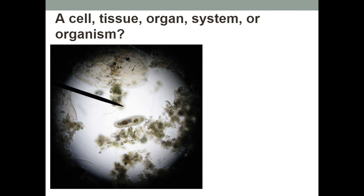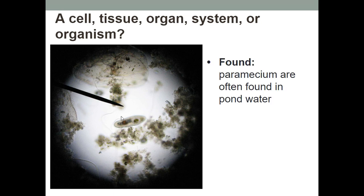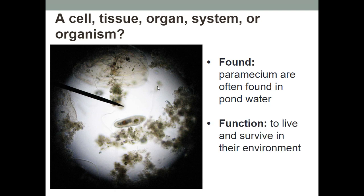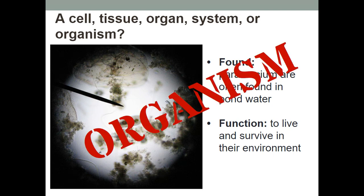Right here you can see what's called a paramecium. They're often found in pond water. Its function is to live and survive in its environment. It's actually an organism, even though it's one cell — it's called a unicellular organism, and it belongs to the protist kingdom.